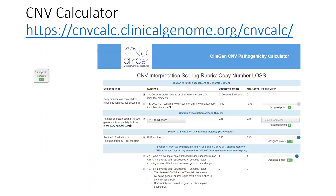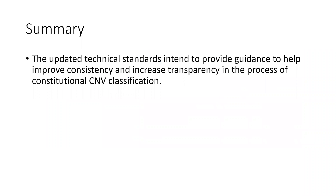In order to help ease people into the transition to a points-based scoring system, the ClinGen Baylor team has developed a simple calculator tool available through the URL on screen. Currently it simply helps people keep track of the points they assign and add them correctly at the end — which is a bigger problem than you might think, as evidenced in our testing. We'd like to explore options to make it smarter over time, pulling in easily obtainable information like gene count and overlap with ClinGen dosage map. In summary, these proposed changes will provide guidance to help improve consistency and increase transparency in the process of constitutional CNV classification.